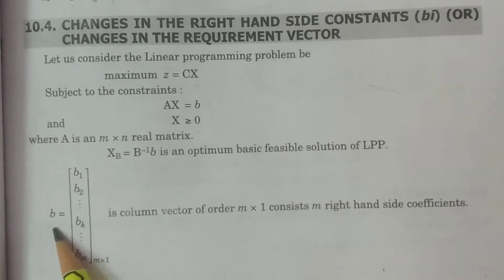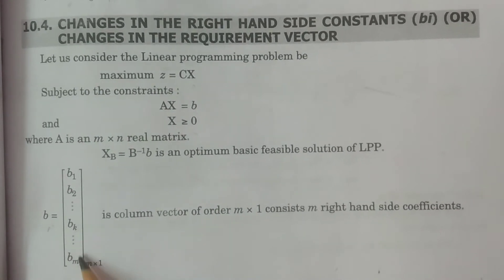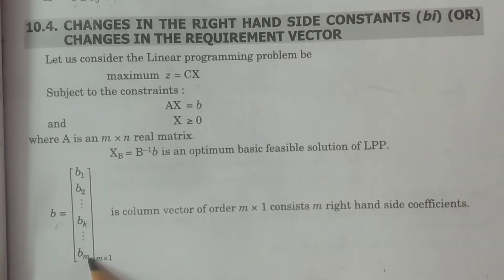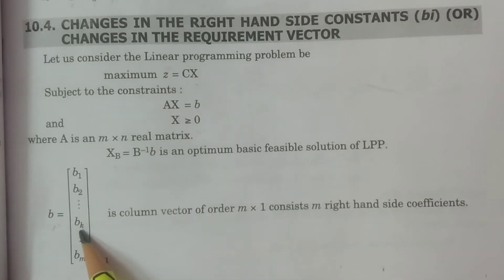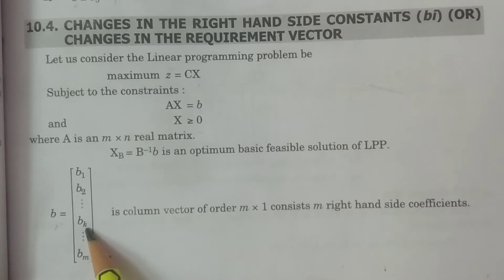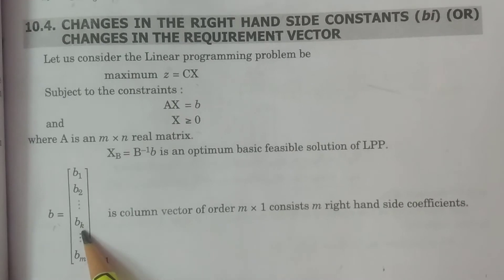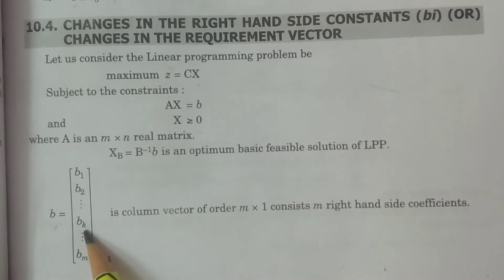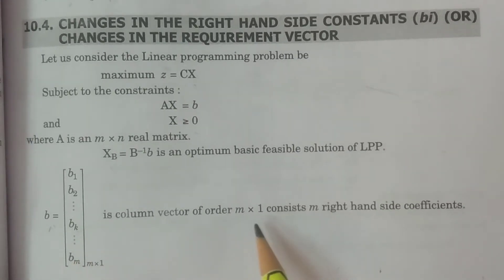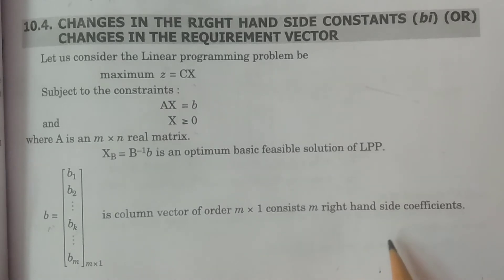B is specified as B1, B2, and so on, Bk, and so on, Bm — the column vector considering all right-hand side constants. We are considering the change to be made for Bk. For example, let us suppose that Bk is changed; it is an m×1 column vector of all right-hand side constants.